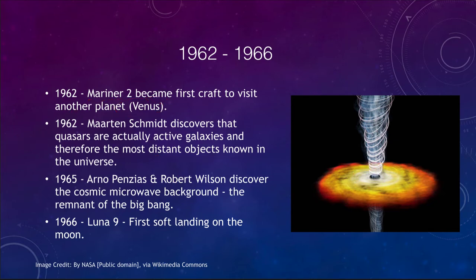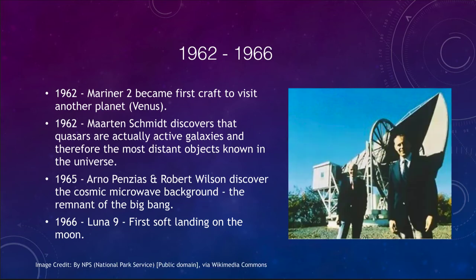A few years later in 1965, Penzias and Wilson discovered the cosmic microwave background. This was a prediction of the Big Bang — the Big Bang predicts this remnant radiation should exist, and they found it when studying the sky with their telescope, not actually looking for it but trying to minimize noise. This background radiation coming from everywhere in space was a big piece of evidence for the Big Bang as the model for the origin of the universe.